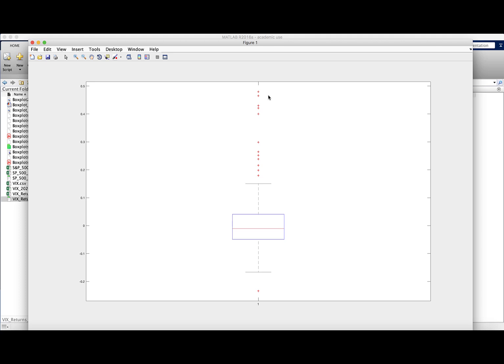So this is a quick way to get a look at a data set, get a feel for how the inner half of the data is behaving and then where the outliers lie.